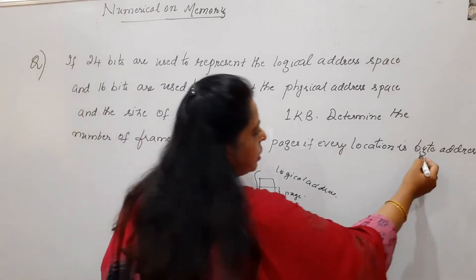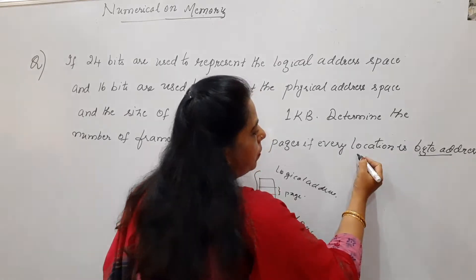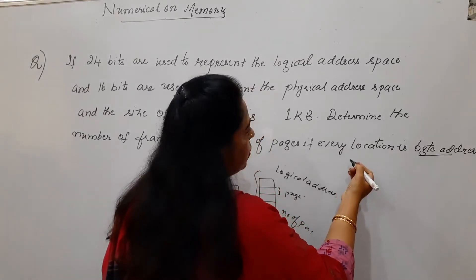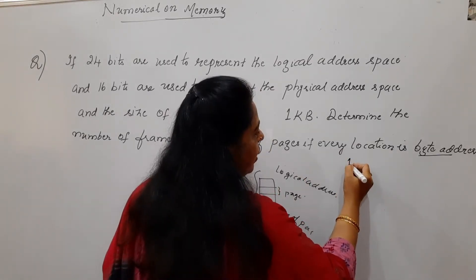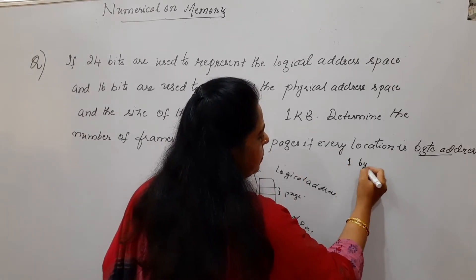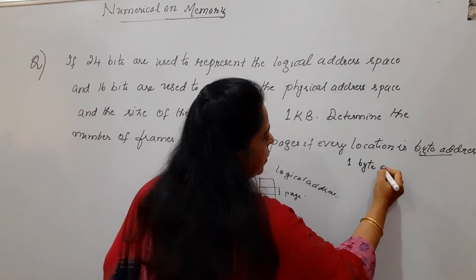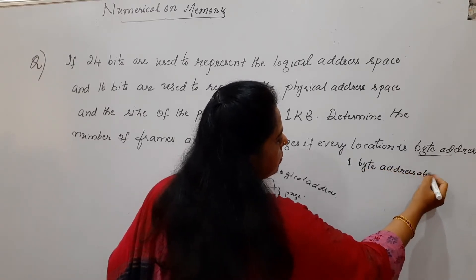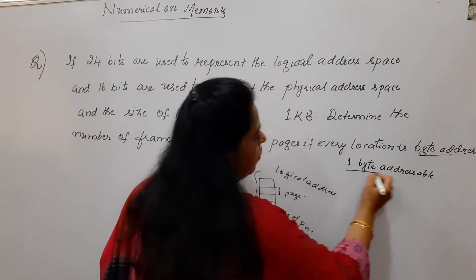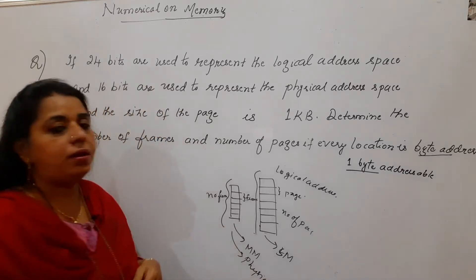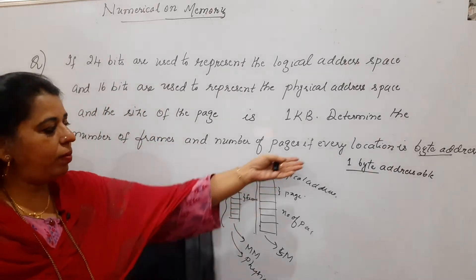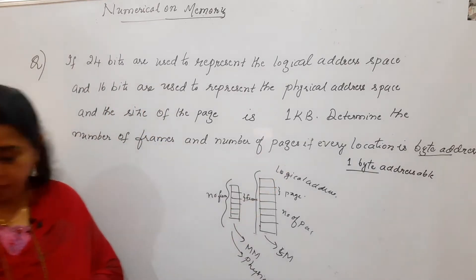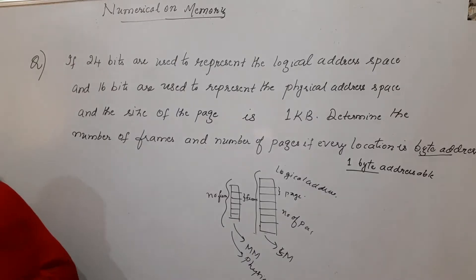Normally, if byte addressability is not mentioned, we assume that to access a location it is 1 byte addressable. Otherwise it will be mentioned explicitly, like 'if every location is byte addressable' or 'single byte addressable.'